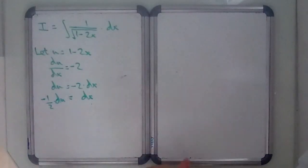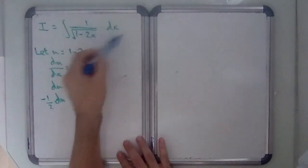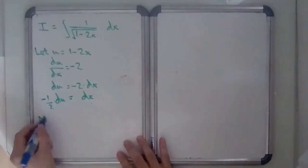So now we can rewrite the integral in terms of this, this being u, and then we can write this dx in terms of du. So dx is now minus 1 half du.